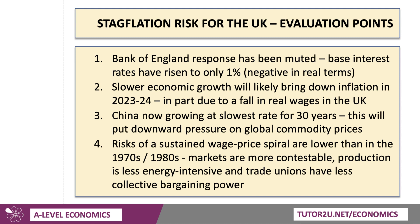That said, slower growth is on its way — and so perhaps the slow growth will bring down inflation in 2023-24. Perhaps this rise in inflation will be modulated by weaker growth, in part because people are suffering a big fall in their real wages and real disposable incomes. Externally, some of the pressures might ease — who knows what's going to happen in the conflict between Ukraine and Russia. But China is now growing at the slowest rate for 30 years, which should help dampen down commodity prices. And the risks of a really big sustained wage-price spiral are probably not as severe as they were when I was learning economics in the 1970s and 80s. Many markets are now much more contestable, there's more competition, production is using less energy, energy efficiency has gone up, and trade unions in the UK only account for one in four workers. There's less collective bargaining power across the whole economy, so perhaps the risk of a wage-price spiral is less severe than one might think.